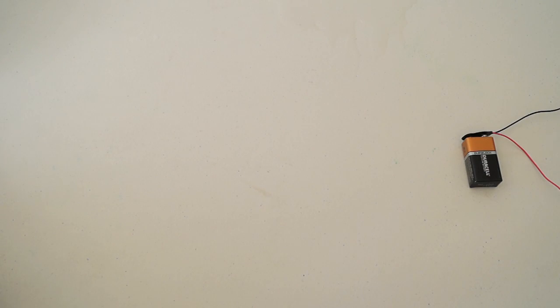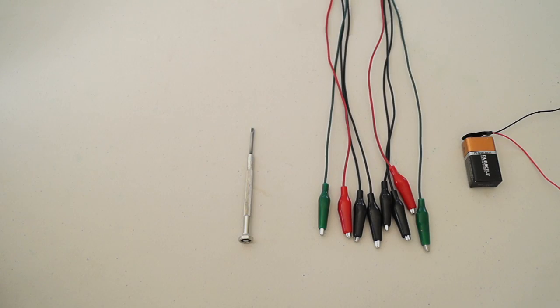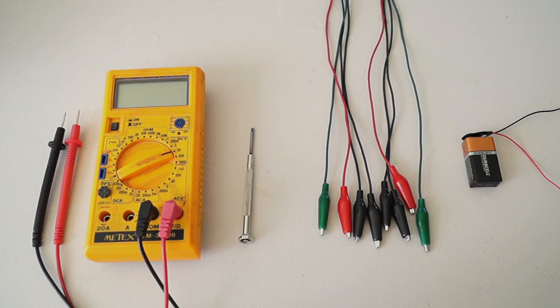In order to operate your aquaplum you will need a 9 volt battery end clip, some alligator clips, a small screwdriver, and a multimeter.